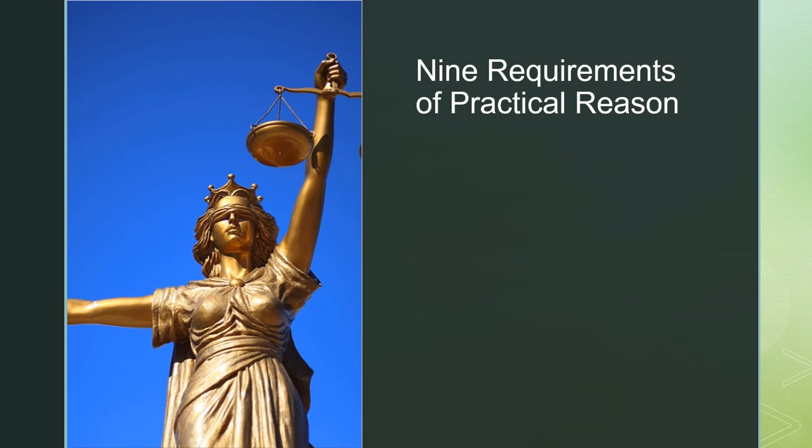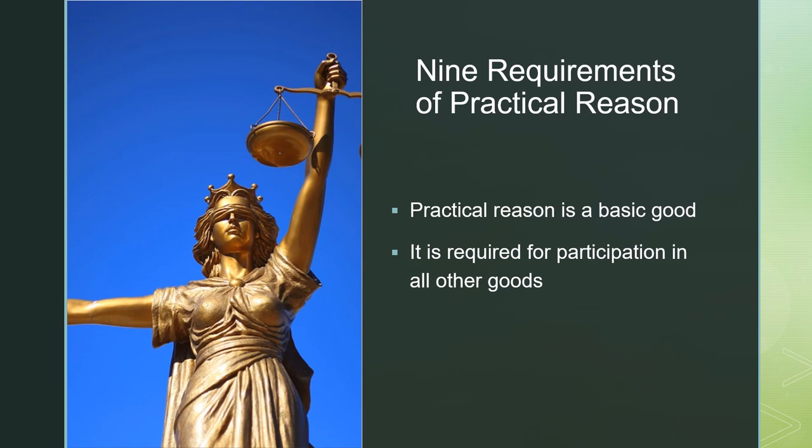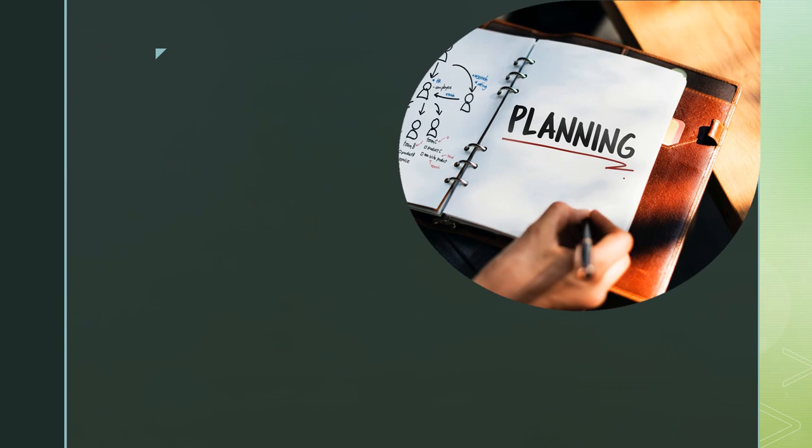Each of the nine requirements of practical reason concerns what a person must do, think and be in order to participate in this basic good. To fail to live up to any of these requirements is unreasonable. Practical reasonableness is both a basic value and concerns one's participation in all the other basic values. They demonstrate the natural law method of working out the moral natural law from the first principles of natural law.